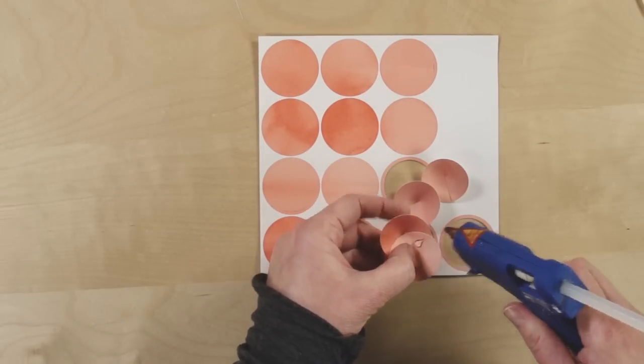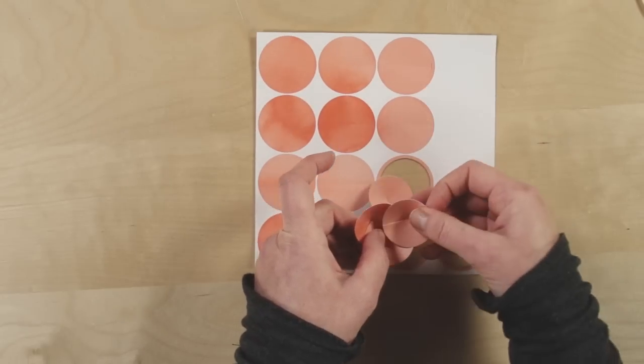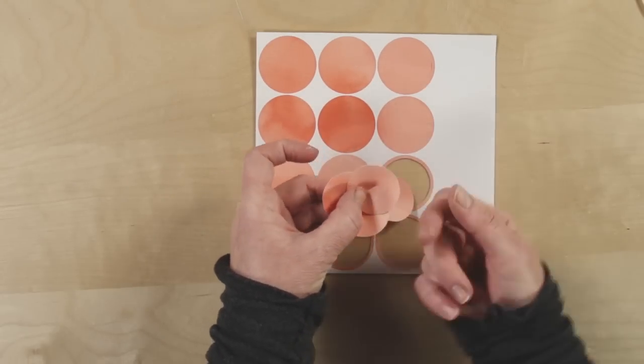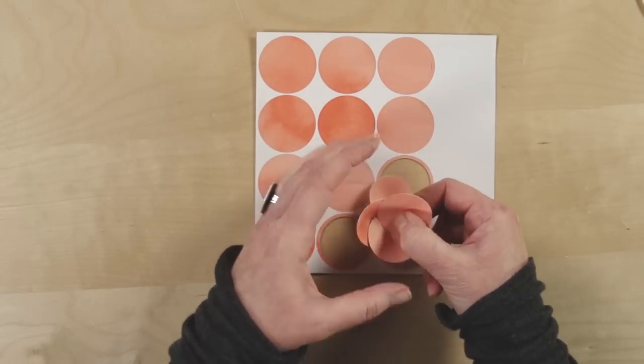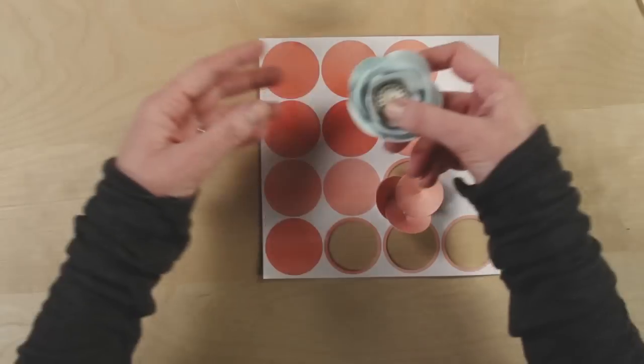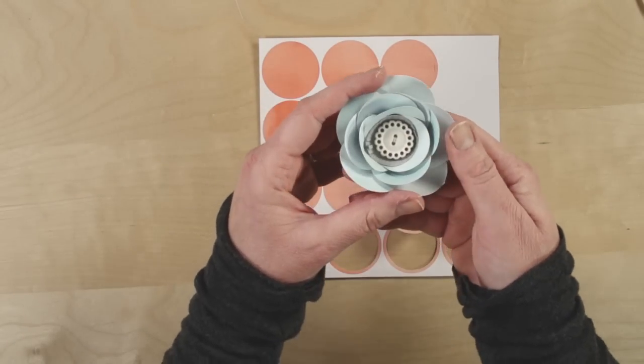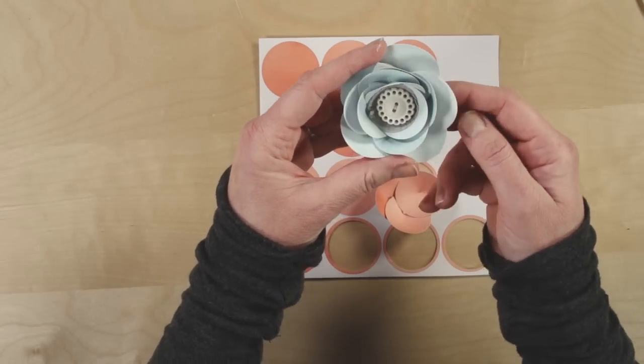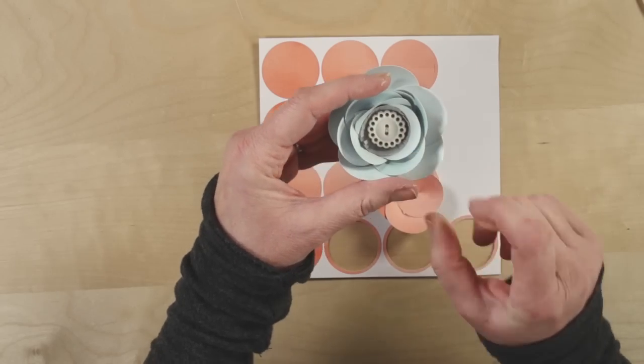So three can be the center of the flower and then you just start layering more and more as you go backwards in a larger flower. Let me show you a finished one of those. Here we have one. So just more and more layers and the center is really cute too.